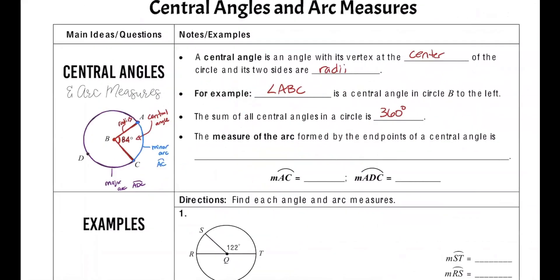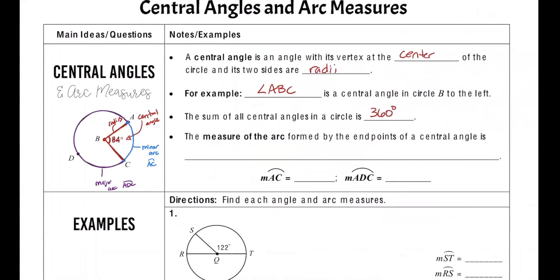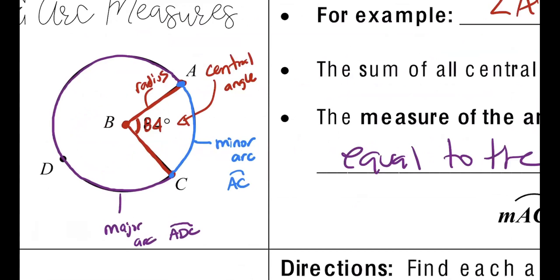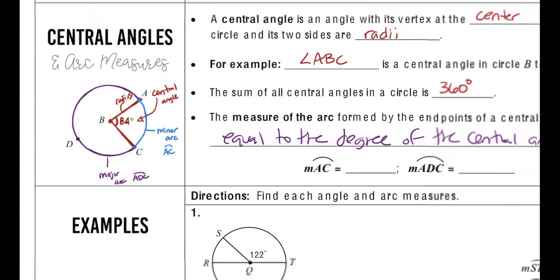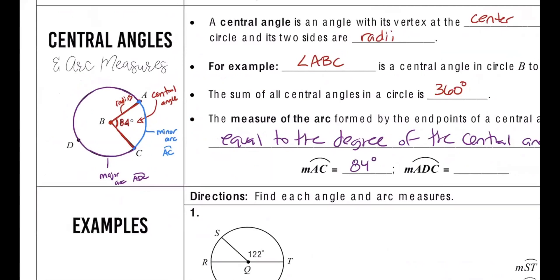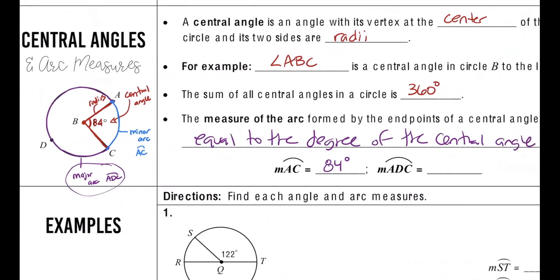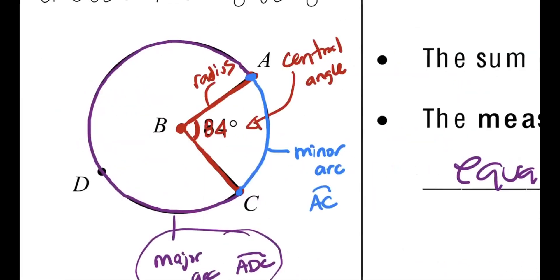So how do we find the measurements? Well, if we go back to our notes, the measure of the arc formed by the endpoints of a central angle is equal to the degree of the central angle. So if the central angle is 84 degrees, guess what the measurement of the arc is? It's also 84 degrees. So if I look at the minor arc AC, that's also 84 degrees. My question is, what would the major arc be going from ADC? 276. And how did you get 276 degrees? You subtract 360 minus the 84 of the minor arc. Perfect.